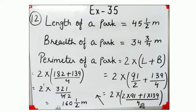First, you will add the length and breadth. When you add these fractions, you will get 321 by 4. After that, you will multiply it by 2.